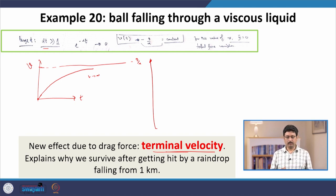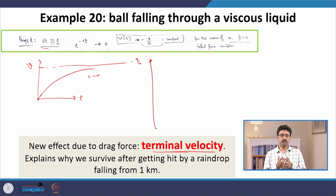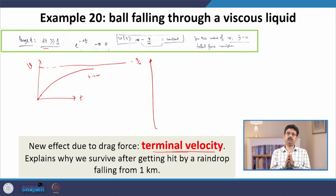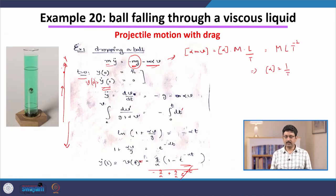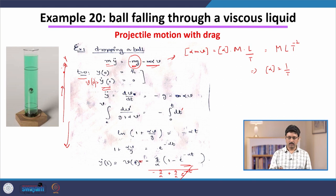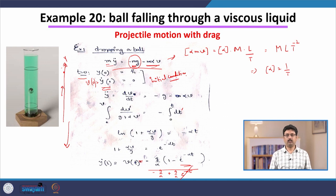Before the next problem, one more comment: this example belongs to the second type of mechanics problem, where the total force on the particle is non-zero, all forces are given, and the initial conditions — initial position and velocity — are given. The equation of motion and initial conditions are known, and our goal is to determine the trajectory of the particle. This problem fits into that particular situation.